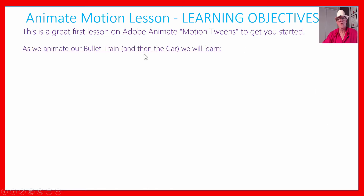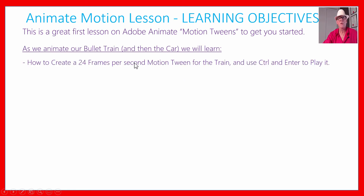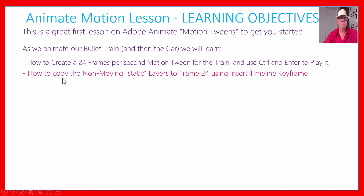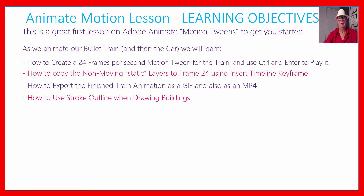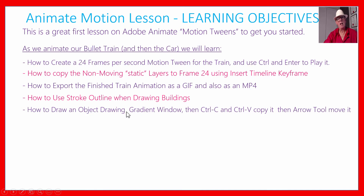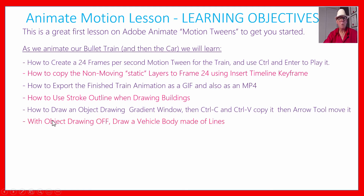The learning objectives of this lesson: it's a great first lesson on making things move. We're going to create a 24 frames per second motion tween for the car and use CTRL+Enter to make it play as a movie. We'll learn how to copy non-moving static layers to frame 24 using Insert > Timeline > Keyframe, how to export the finished train as an animated GIF, and how to make an MP4 movie. We'll also learn how to use a stroke outline when drawing buildings, and how to make object drawing gradient windows using CTRL-C, CTRL-V, and the arrow tool to move.